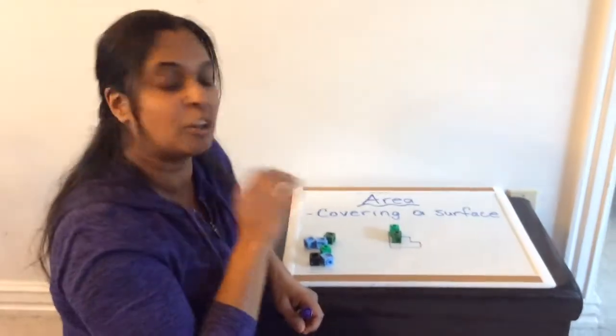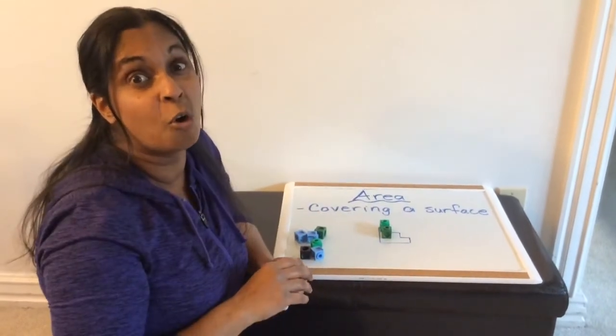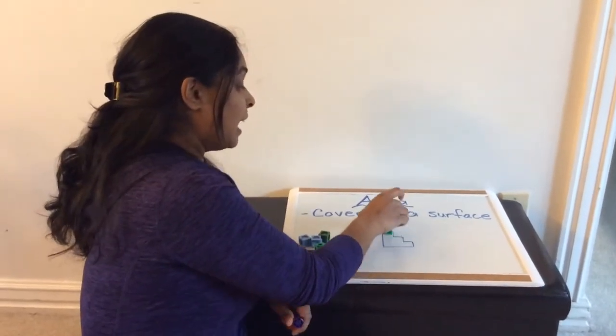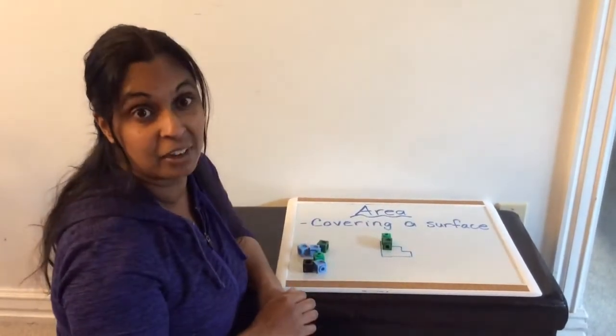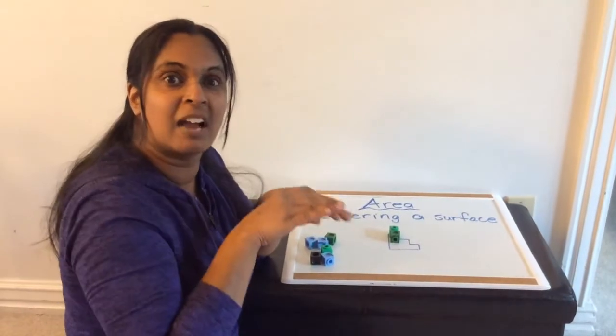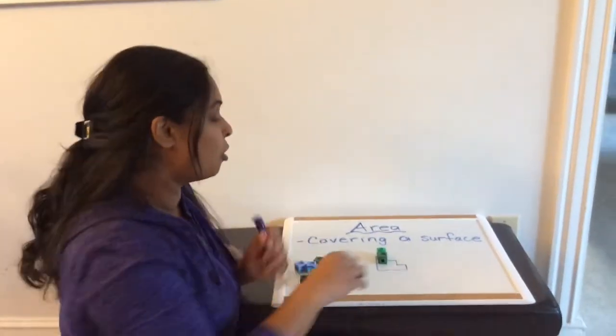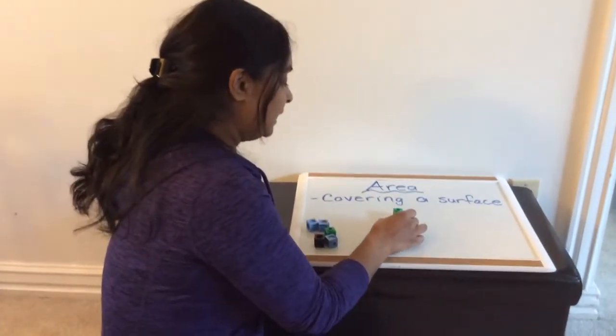But another thing you have to be careful with when you're using flat pieces to cover is that you don't overlap them. These are not easy to overlap because I can't really make them go one on top of the other without snapping them together. But when you're using papers to cover, you might overlap them a bit. So make sure no overlapping, no spaces and that we cover this completely.